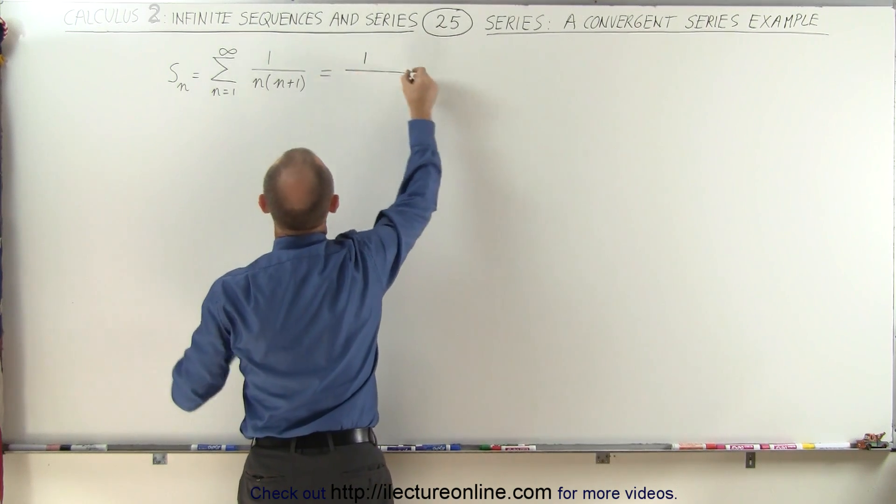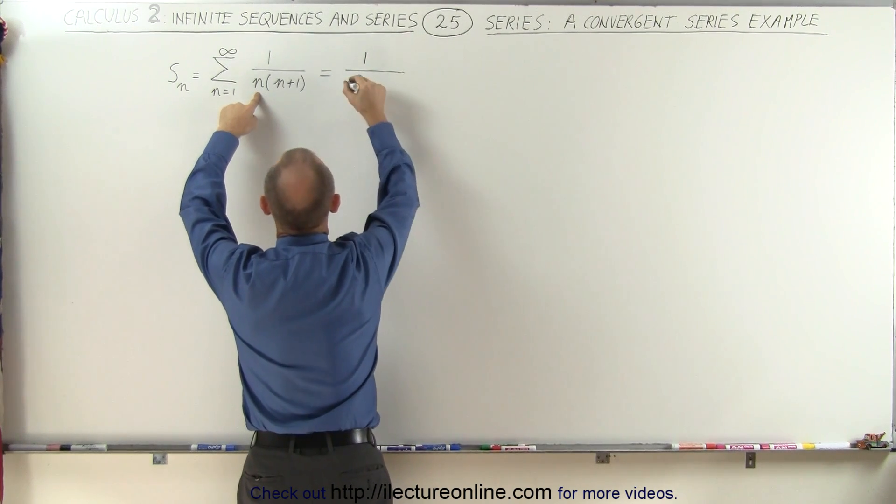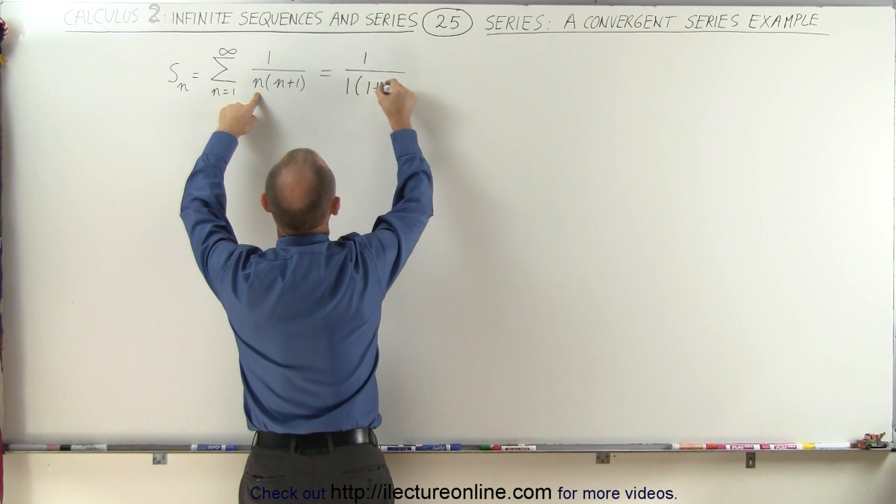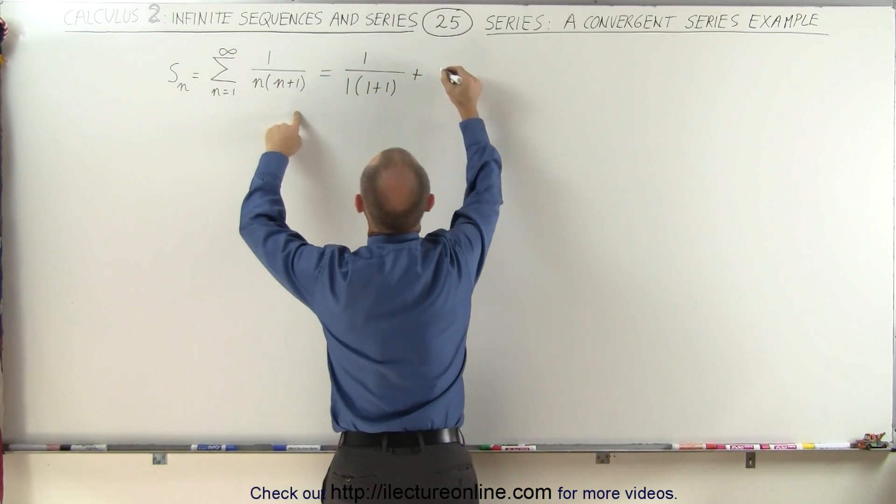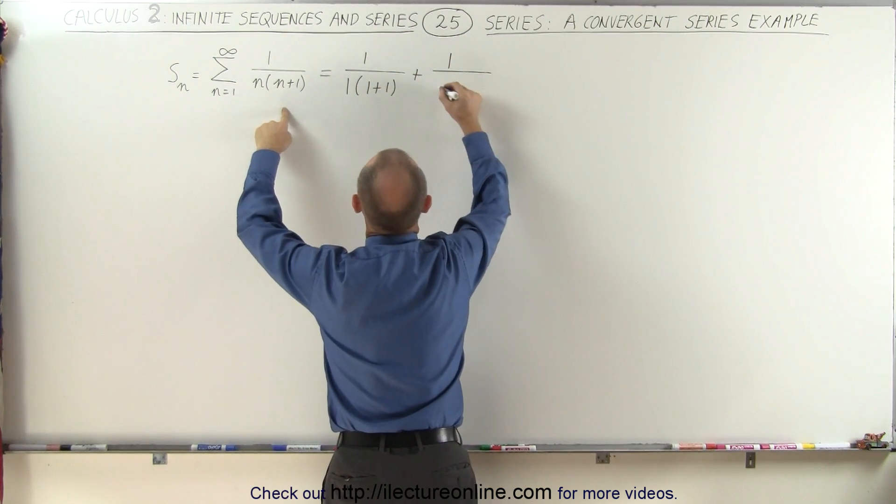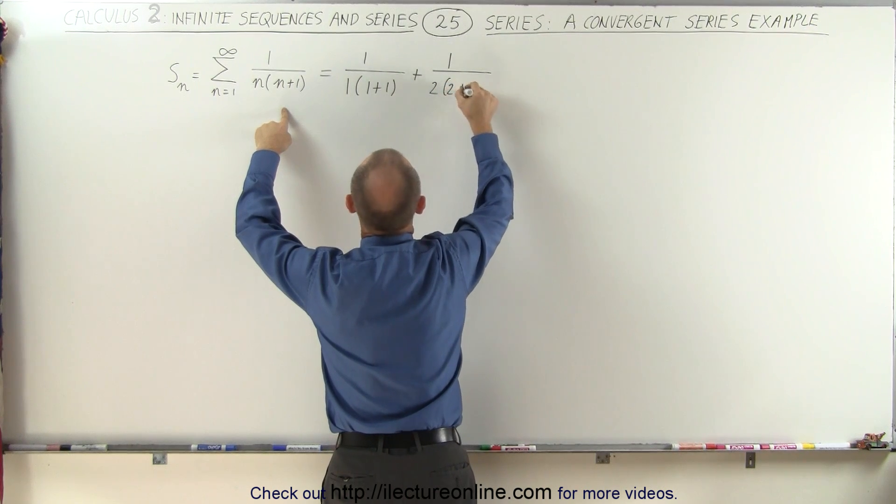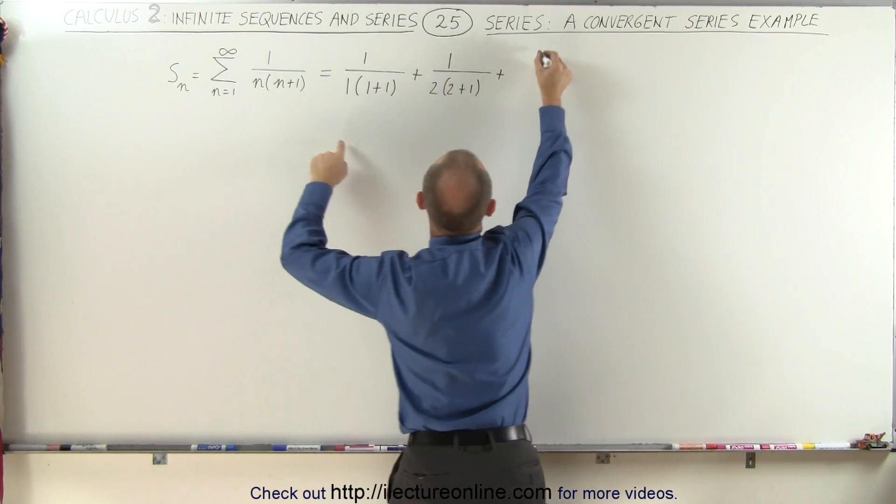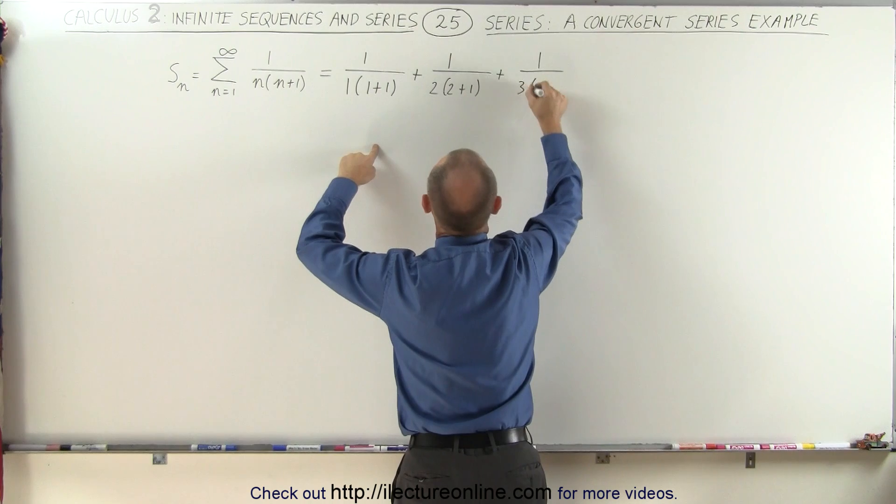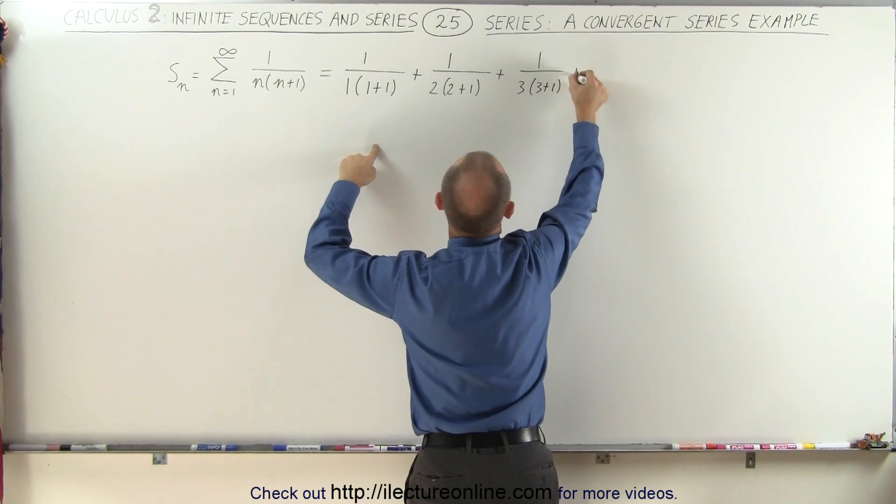This is equal to 1 divided by, when n is equal to 1, this becomes 1 times 1 plus 1, plus when n is equal to 2, this becomes 2 times 2 plus 1 in the denominator, plus 1 divided by 3 times 3 plus 1, and so forth.